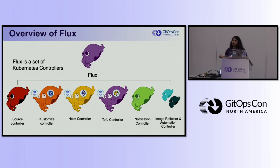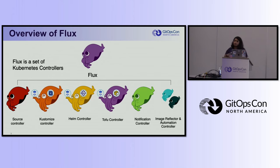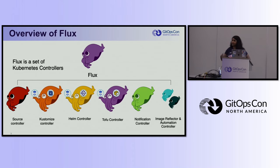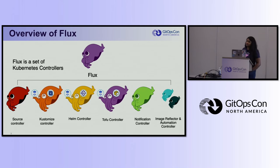The Kustomize controller will then go in, and if you're using Kustomization YAMLs or just vanilla YAMLs, it will activate and apply what's there. If you have a kustomization.yaml, it follows that blueprint. If you don't, it creates one on the backend and applies everything recursively within that file path. The Helm controller looks for Helm releases and installs Helm charts using the true Helm API, so you can use the Helm CLI to interact with things deployed using Flux.